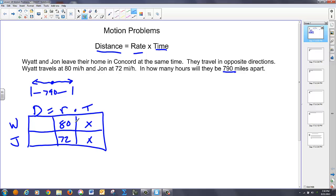And at this point, what I do is I notice, since I have two pieces of information and a relationship between those two pieces of information, I just multiply those together to get an expression for the distance each has traveled. So Wyatt's gone 80X miles, and John's gone 72X miles. Now, I look at the picture over here, and let's call one Wyatt and one John. It turns out Wyatt's distance and John's distance has to total 790.